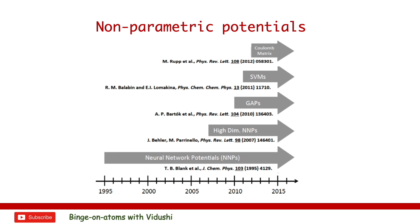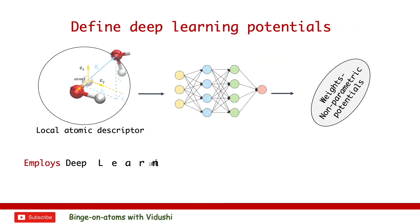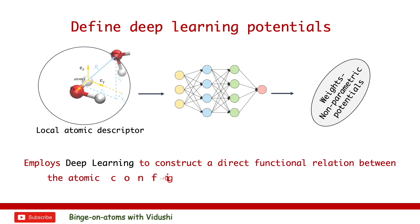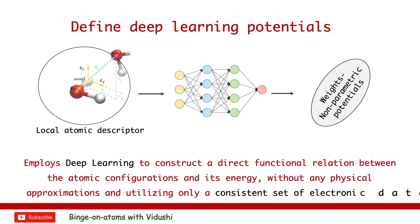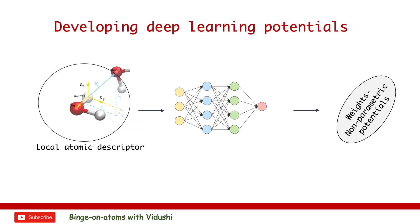In upcoming videos, I will describe prominent methods in more detail and how you can select the best one for your material based on your available data. Deep learning potentials employ deep learning to construct a direct functional relation between atomic configurations and their energy. These do not contain any physical approximations apart from the chosen reference electronic structure method used in their construction and a consistent set of electronic data used in their generation. Currently, deep learning potentials are being used to predict properties of old and new structures in material science.